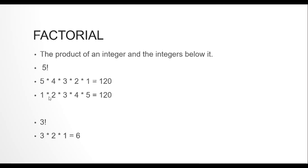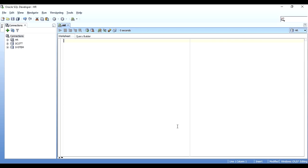Starting with 1 × 2 gives us 2. We multiply that 2 by 3 to get 6. Then we multiply 6 by 4 to get 24. Then we multiply 24 by 5 to get 120, and then we print 120. So I'll hop onto SQL Developer and write this program.